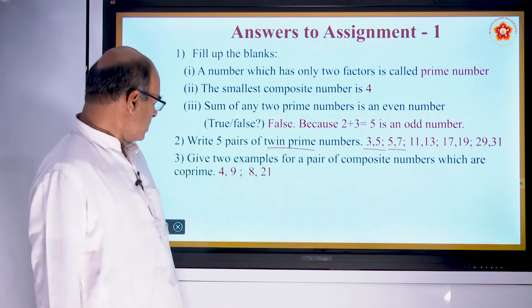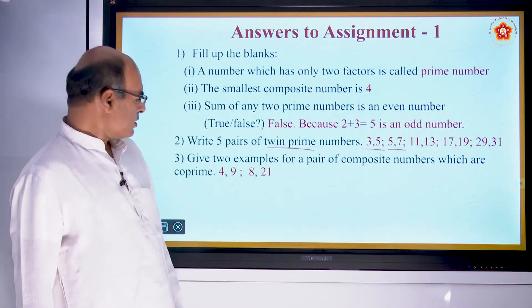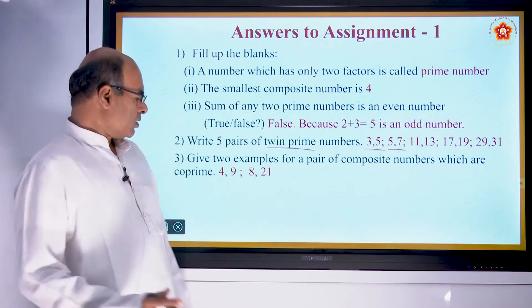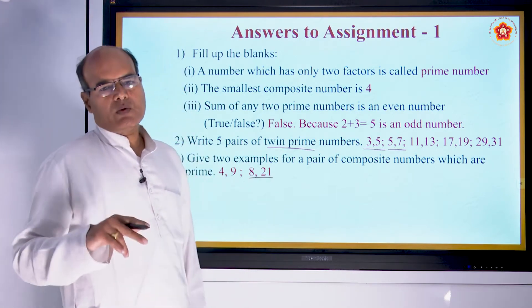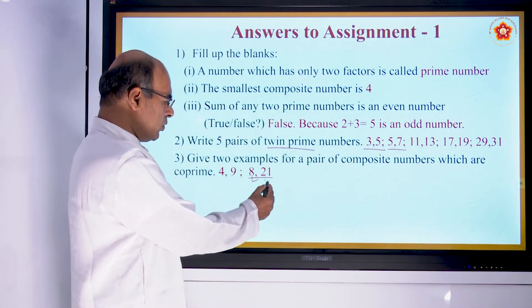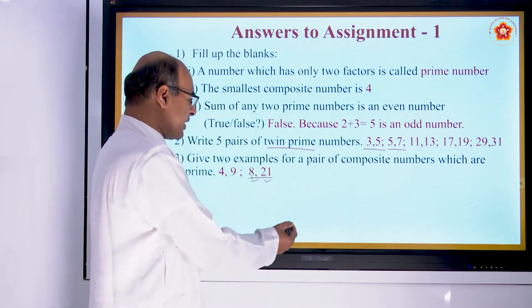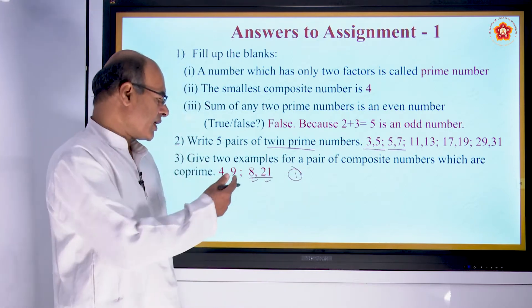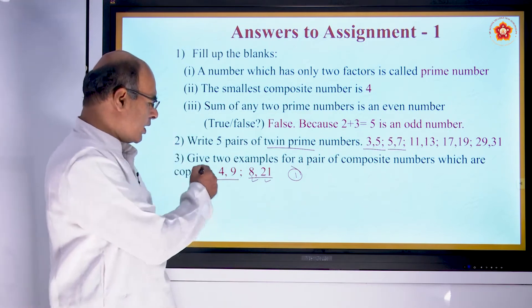Next question: give two examples of a pair of composite numbers which are co-prime. If two numbers do not have any common factor other than 1, they are called co-prime numbers. Here, 8 is a composite number and 21 is also a composite number, but their common factor is only 1. Therefore they are co-prime. Similarly, 4 and 9.